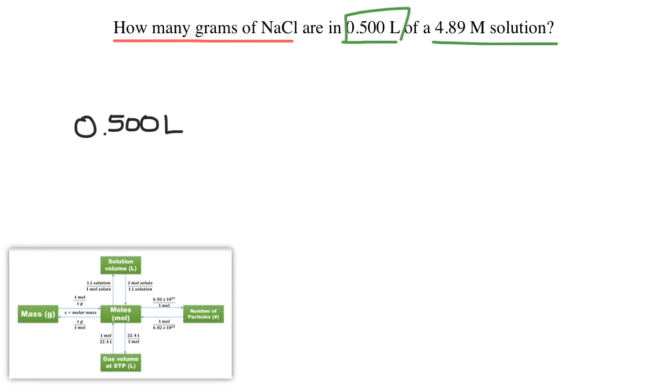So we take our given 0.5 liters and we'll multiply it by the conversion factor of concentration, moles over liters. That was given to us in the problem as well. Now remember that the capital M here means moles of solute over liters of solution. So I can write this number 4.89 as 4.89 moles over one liter. That means the same thing as 4.89 capital M. You can see that the liters will cancel bringing me to the center of the mole map, the mole.